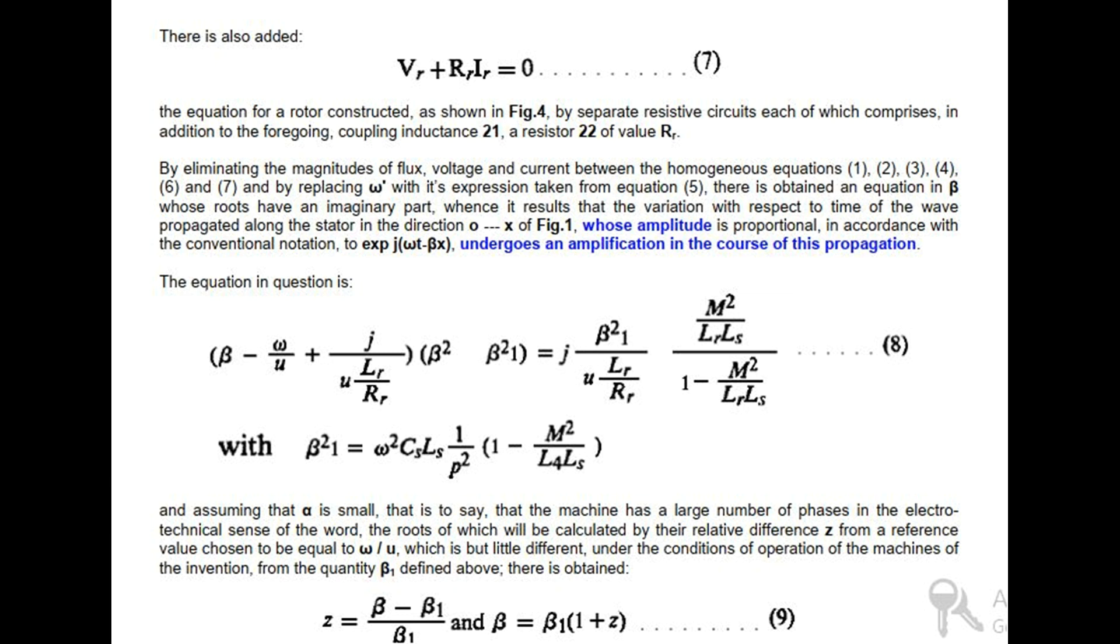The equation in question is given, and assuming that α is small, that is to say that the machine has a large number of phases in the electrotechnical sense of the word, the roots of which will be calculated by their relative difference z from a reference value chosen to be equal to omega-zero/U, which is but little different under the conditions of operation of the machines of the invention from the quantity beta-one defined above.